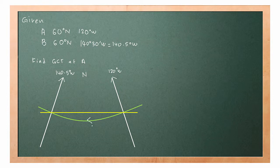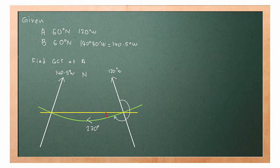As we know, if we fly following the latitude we fly a rhumb line track. Since we are given only one latitude and travelling west, the rhumb line track will be 270°, measured from here to here. We want to find the great circle track at position A, so we need to add an angle. This angle is known as the conversion angle.